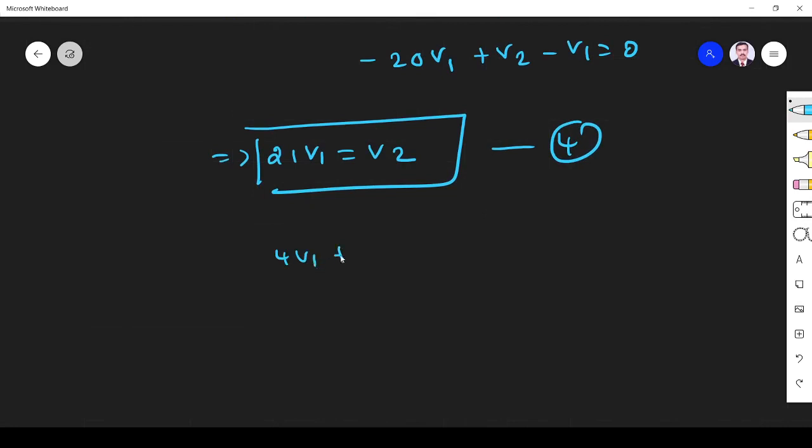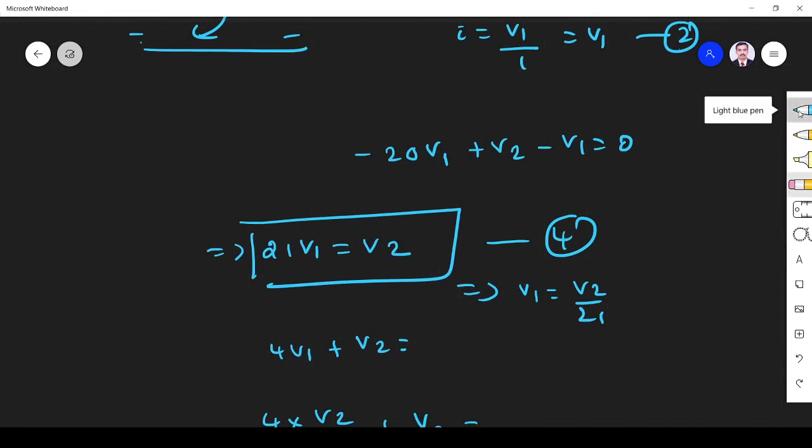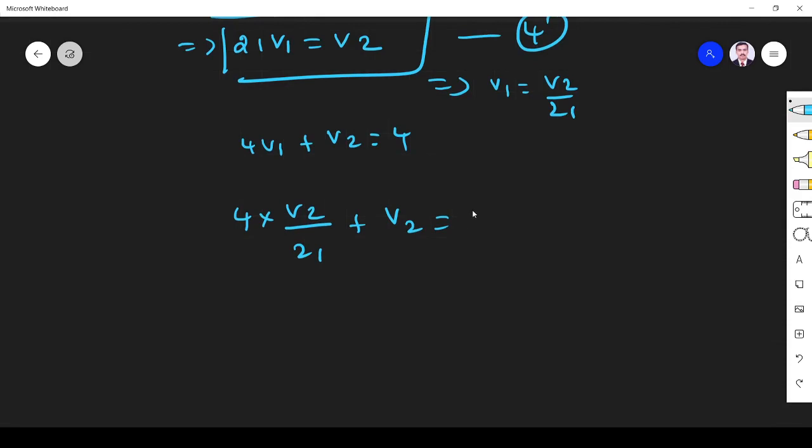From this equation, V1 = V2/21. So 4 times V2/21 plus V2 equals 4. Take LCM: 4V2 + 21V2 = 25V2 = 84. Therefore V2 = 3.36 volts.